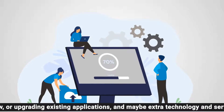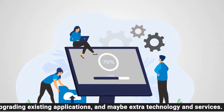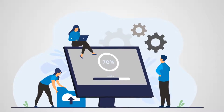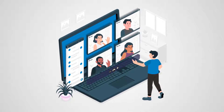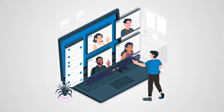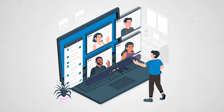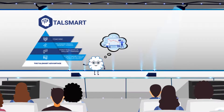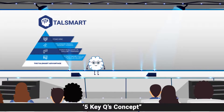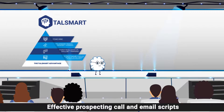Sam's purpose is to call the prospect with an engaging purpose that they will be interested in — not to market a product or make introductions. He is trying to determine whether the customer is having any challenges and whether those challenges are leading to bigger business issues. The objective here is to learn how to use the five key cues concept to build out effective prospecting call and email scripts.